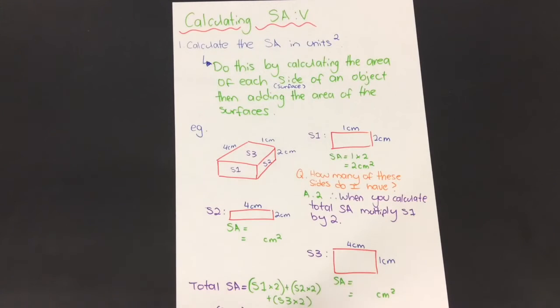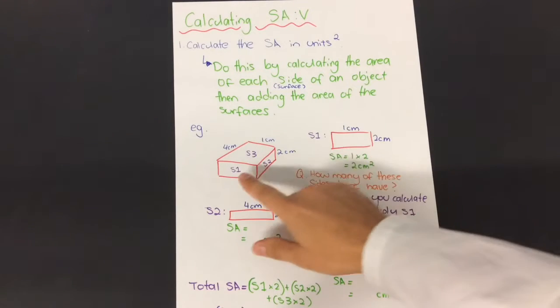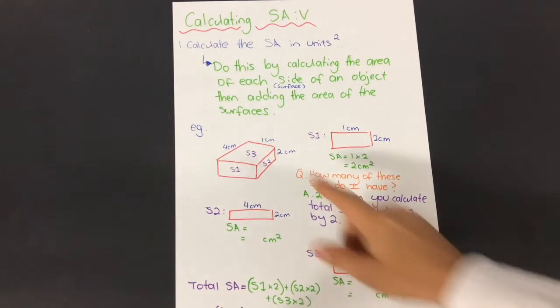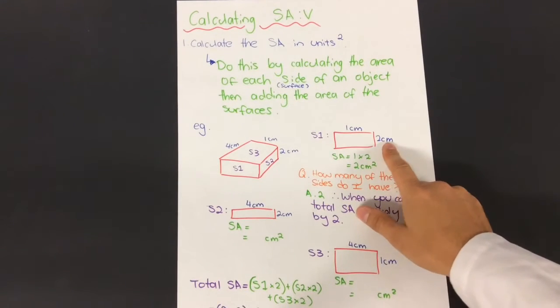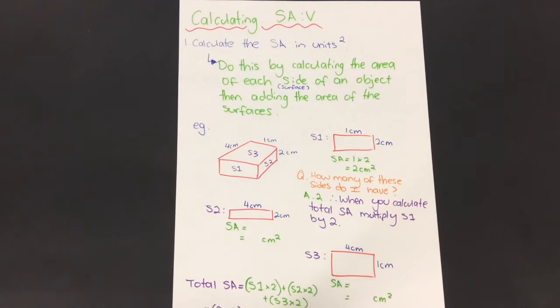This is a great idea if you've got a slightly complicated object. Surface one, which is here, I've got the dimensions of one centimeter by two centimeters. To find the area or the surface area of that object, I just multiply those two together. So one times two gives me two centimeters squared.